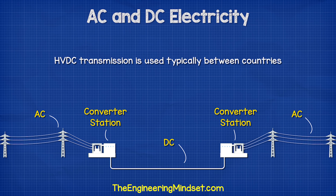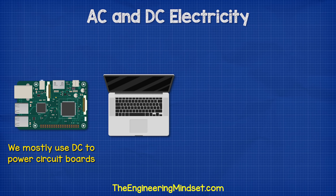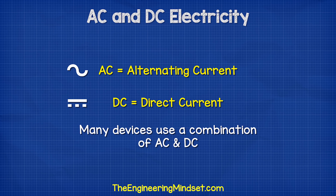We mostly use DC direct current for the circuit boards of small electronic devices like laptops, mobile phones, and TVs. That's because DC is easier to control and allows circuits to be smaller and more compact.